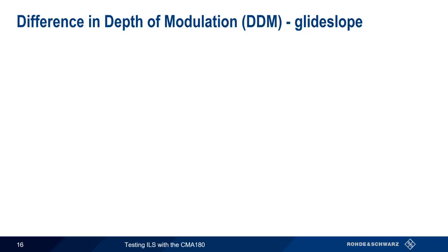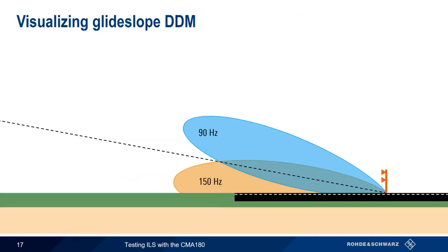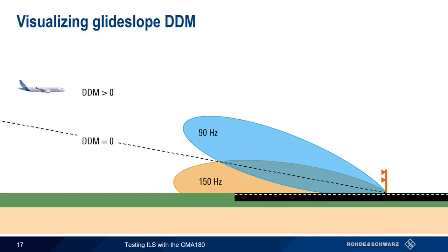Glide slope is also analogous to localizer when it comes to difference in depth of modulation, but with one important difference. The standard AM modulation depth along the glide slope is 40% for each lobe, as opposed to the 20% standard modulation depth seen on the localizer centerline. As with localizer, an aircraft on the glide slope will see the same depth of modulation from both lobes and DDM will be zero. Flying above the glide slope moves the plane more into the 90 Hz lobe and DDM increases. Flying below the glide slope moves the plane more into the 150 Hz lobe, causing a decrease in DDM, and the glide slope needle is controlled by these changes in DDM.